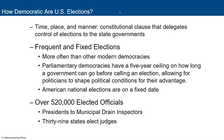The time, place, and manner of elections in the United States, especially federal elections, is in a constitutional clause that delegates control of those elections to state governments. We have in the United States frequent and fixed elections — we have more elections more often than other modern democracies. In a parliamentary democracy, there's a five-year ceiling on how long a government can go before calling an election, which allows politicians to shape political conditions for their advantage.